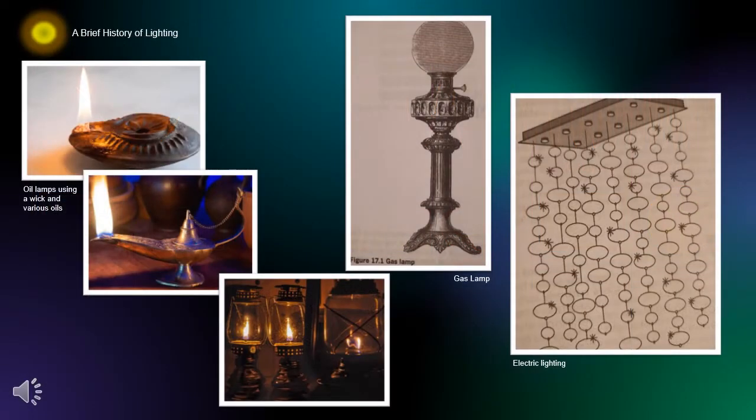You've likely heard the term burning the midnight oil. This makes sense when we understand that the earliest forms of supplemental lighting were created through burning plant and animal oils in various containers made of clay, metal, bone, or stone. Beeswax was also used, and candle making became a time-consuming task as well as an art.